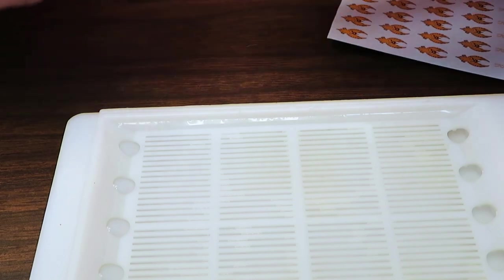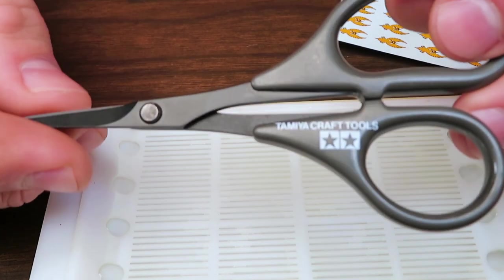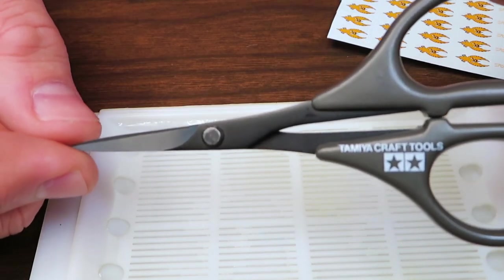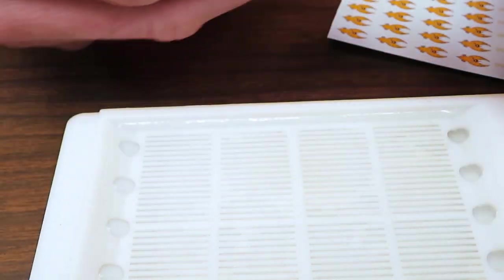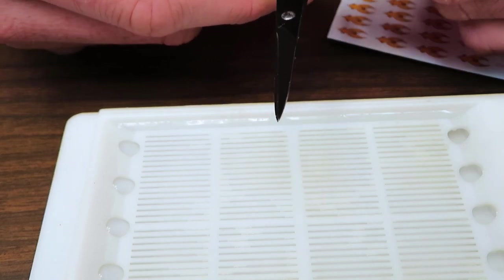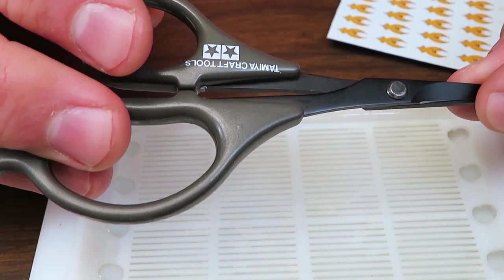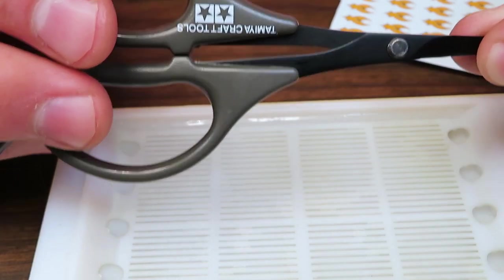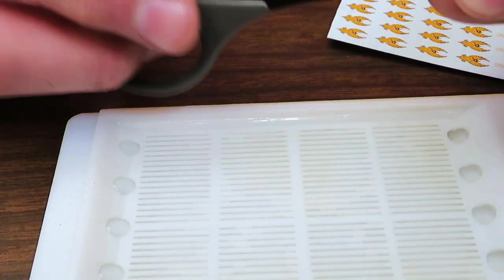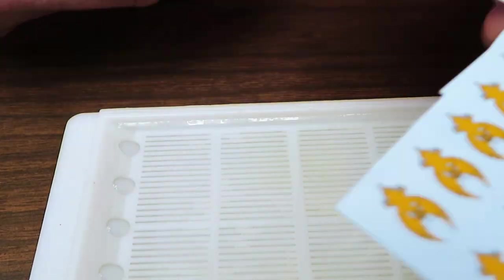Once again, keeping with my theme of being bougie, these are my Tamiya decal scissors. They're very fine point. I love these things. They are super good for getting really close to the decal. So that's what I'm going to do. I'm going to cut out my decal.